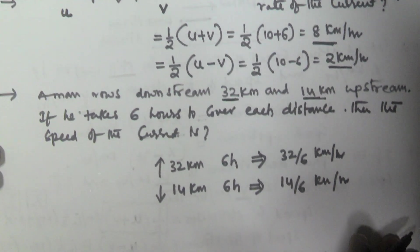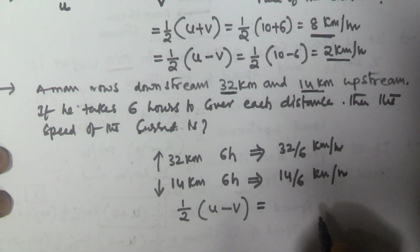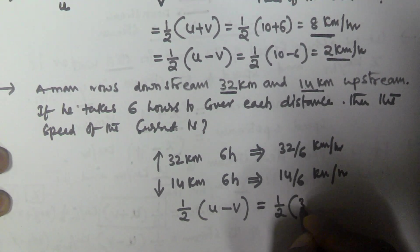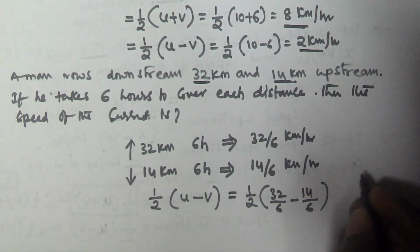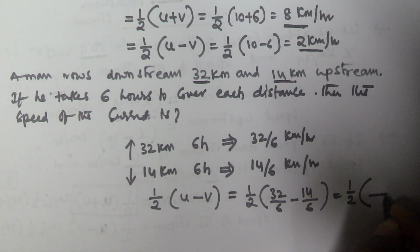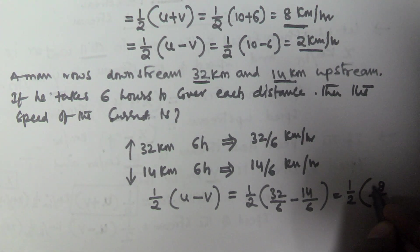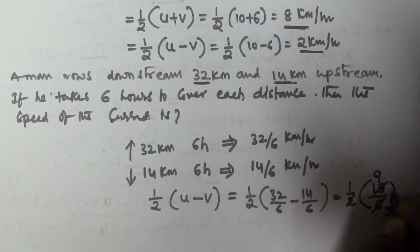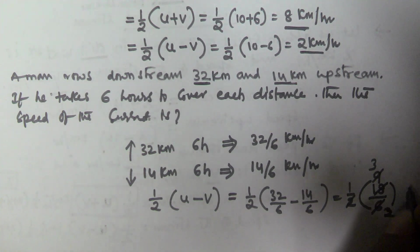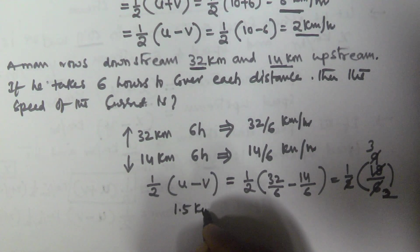The speed of the current is given by 1/2 into (upstream minus downstream). So that is 1/2 into (32/6 minus 14/6), which equals 1/2 into (18/6), giving us 1/2 into 3, which equals 1.5 km per hour. That is the speed of the current.